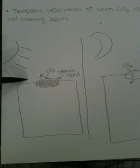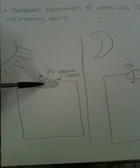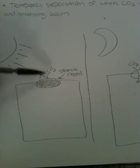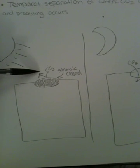During the daytime, plants close their stomata to reduce water loss in these dry environments. But since the stomata is closed, CO2 cannot come in during the day.